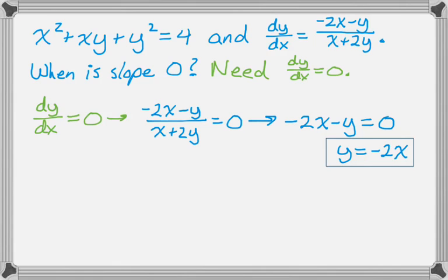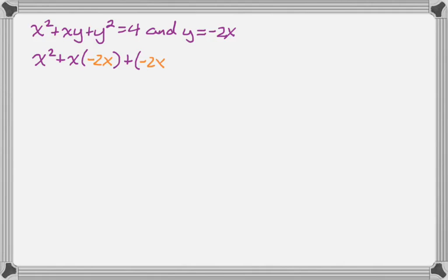But I need to still find x and y. So what I'll do is I'll go back to the relationship: x squared plus xy plus y squared equals 4. And now I know that y equals negative 2x. System of equations, I'm just going to substitute in. So I do that.